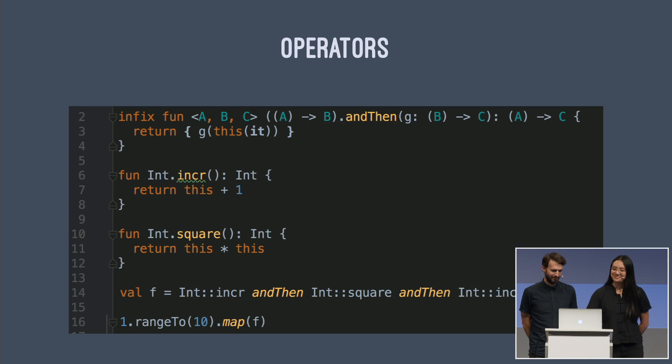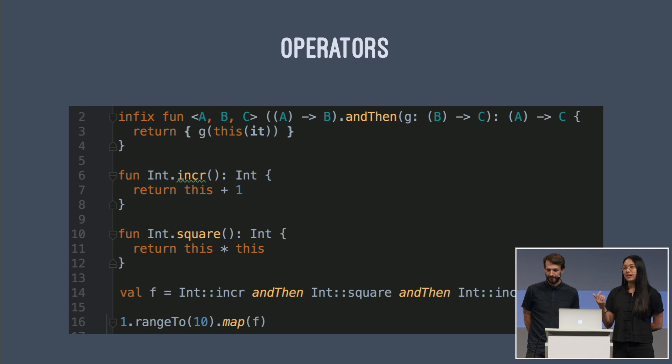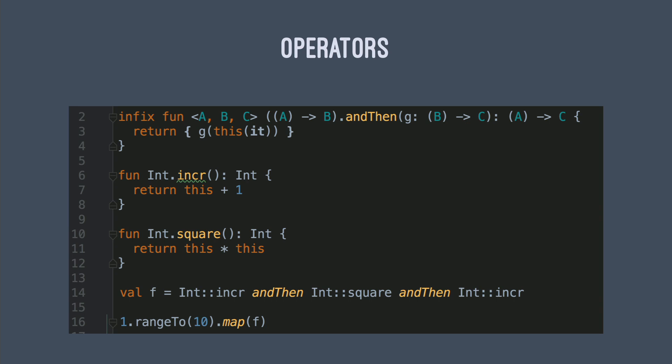Kotlin doesn't have support for custom operators, but it does allow you to define infix functions. You can define a function that takes two arguments and use it in an infix manner. Here we've defined an `andThen` infix function that takes a function from A to B on the left and a function from B to C on the right, returning a function from A to C — the exact same thing as Swift's forward composition operator. This allows us to chain `increment` and `square` together in any order and feed that function to `map` to transform an array of integers.